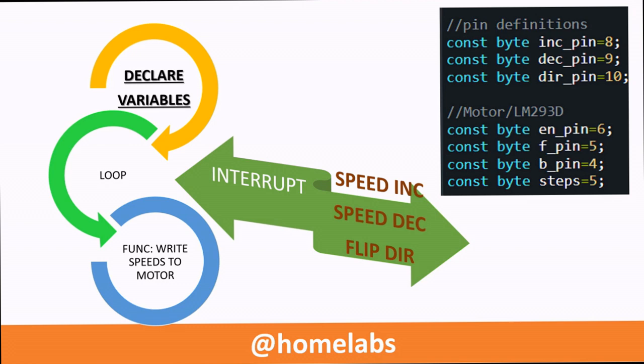This is a block diagram of the code that I have used. The first step is to declare the variables, then to write a loop which runs repeatedly. This loop is interrupted by interrupts, pin change interrupts to be precise. One of these pin change interrupts is for speed increase, the second one is for decreasing the speed and the third one is for flipping the direction of the motor. This loop also calls a function to write the speeds and the direction to the motor.